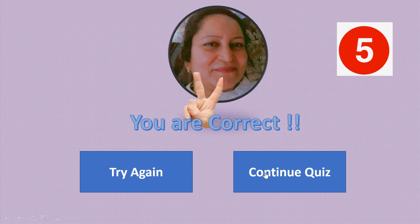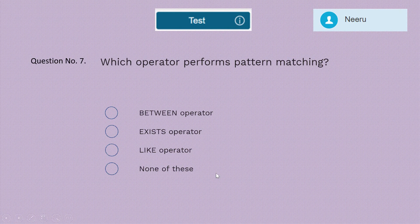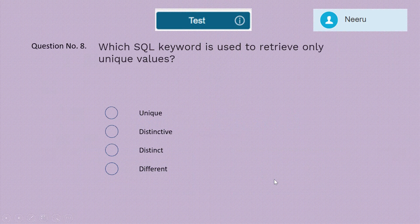Question 7: Which operator performs pattern matching — between, exists, like, or none of these? The correct answer is the LIKE operator. The LIKE operator is used for pattern matching using wildcard characters. Five marks for this option.